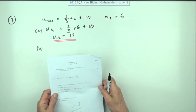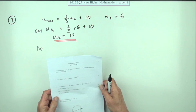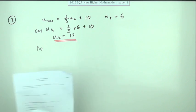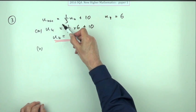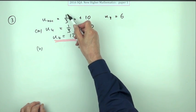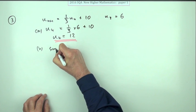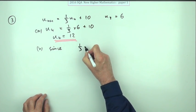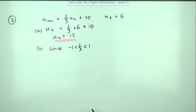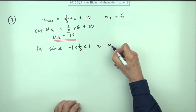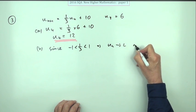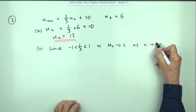Now part B for 1 mark. Explain why this sequence approaches a limit as n tends to infinity. Well, the reason is it's being multiplied. The coefficient is a proper fraction, so you'd have to state that. Since 1 third is a proper fraction between 1 and negative 1, that means that un will approach a limit as n tends to infinity.